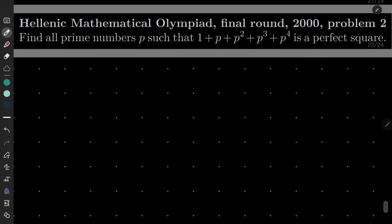Okay. So my solution will be as follows. Let's take our sum and let's multiply it by 4 to the 4th.